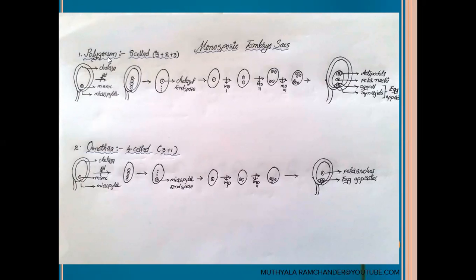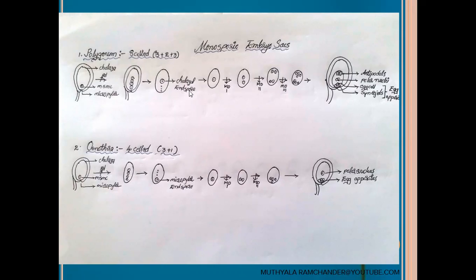Polygonum species of angiosperms contain polygonum type embryosacs. In the complete ovule structure, integuments surround the nucellus tissue. From the nucellus at the micropylar region, one single diploid cell acts as the Megaspore mother cell. This cell participates in reduction or meiotic division to form four haploid megaspores arranged linearly at the micropylar region. The chalazal end megaspore develops into the complete embryosac — this is the polygonum type of embryosac.